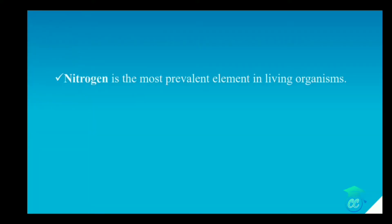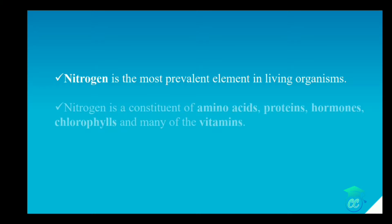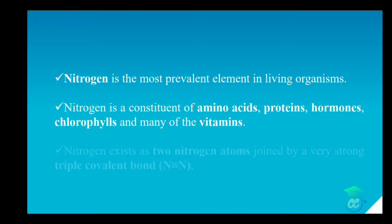Nitrogen is the most prevalent element in the living organism and is a constituent of amino acids, proteins, hormones, chlorophylls and many vitamins. This nitrogen exists in the form of two nitrogen atoms joined by a very strong triple covalent bond. So let's look at what is the nitrogen cycle.